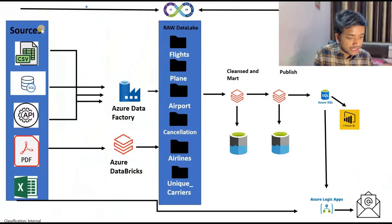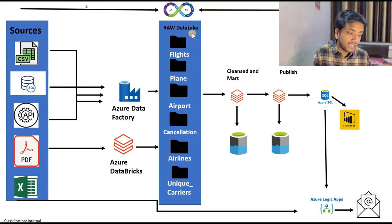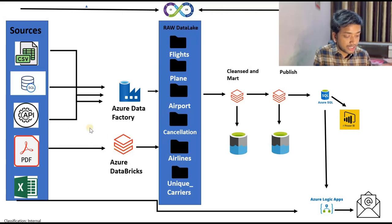Now let's understand the architecture first. Here you can see the sources: we have CSV files, SQL files, APIs, PDFs, and Excel. We copied all these things — CSV means Blob Storage or a Gen2 location, SQL tables from one database, API data — all copied using ADF and put into the raw data lake.